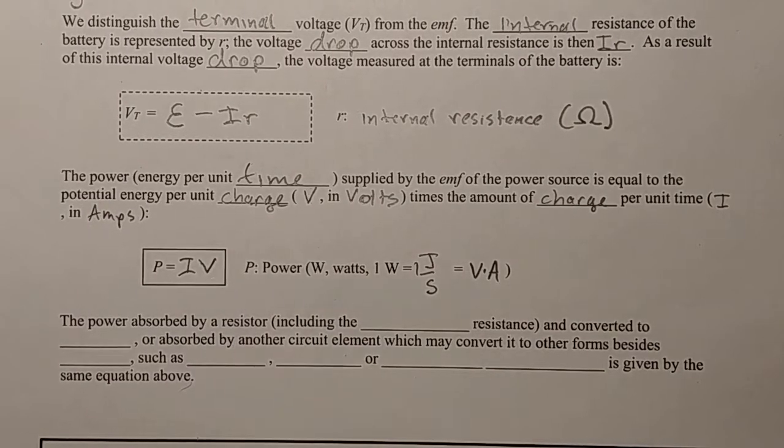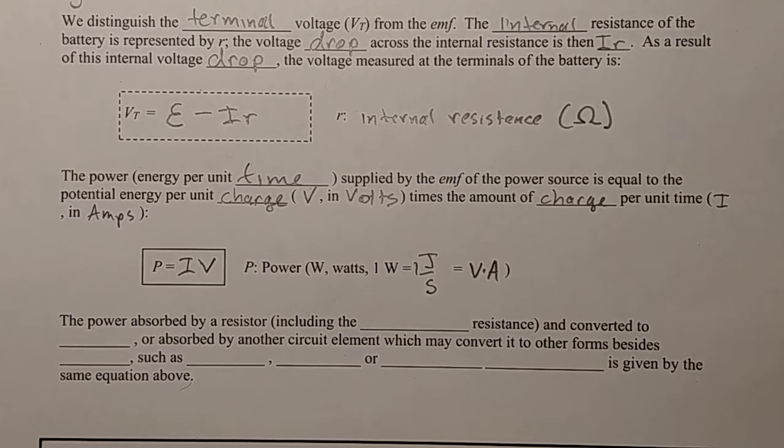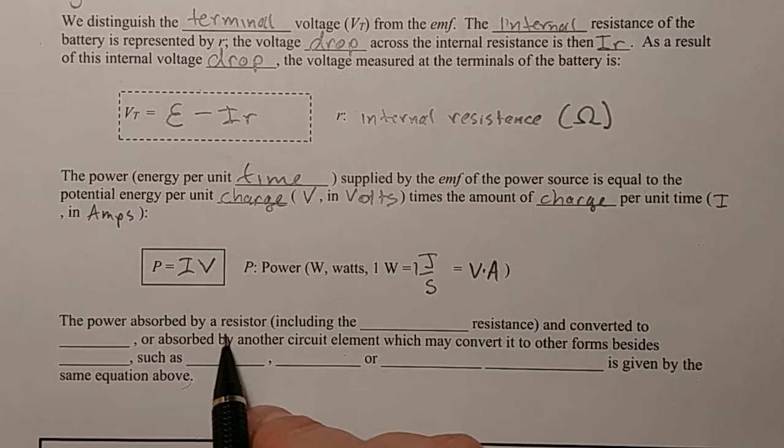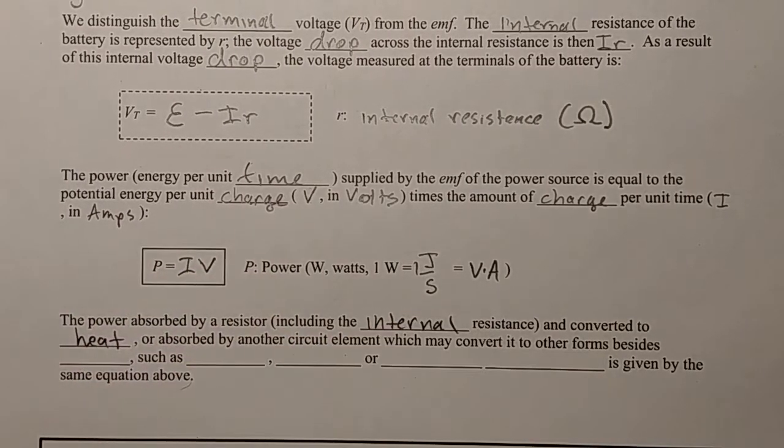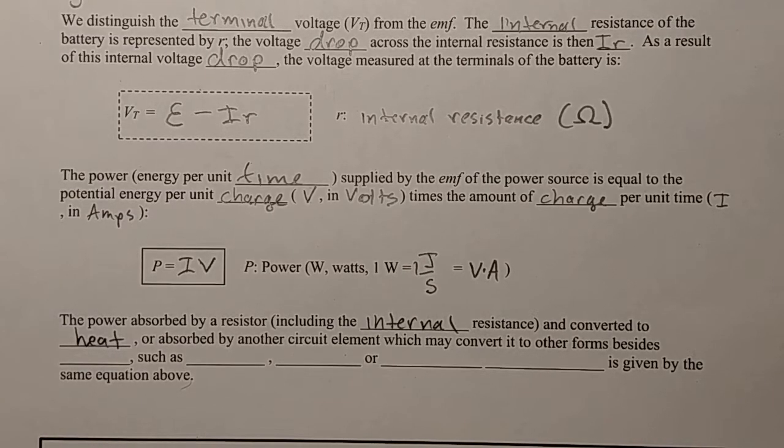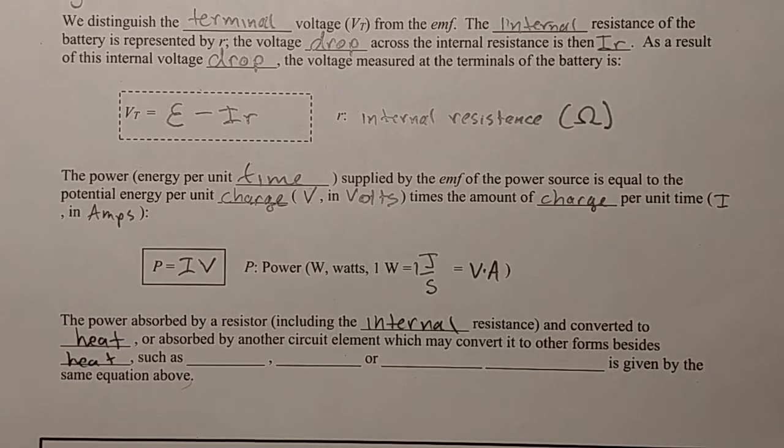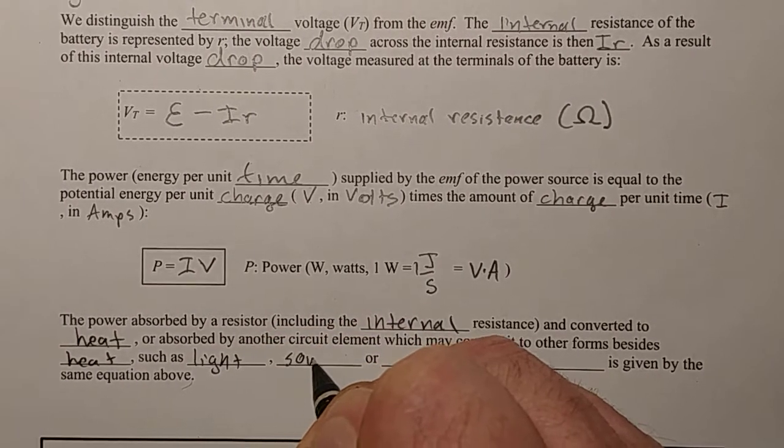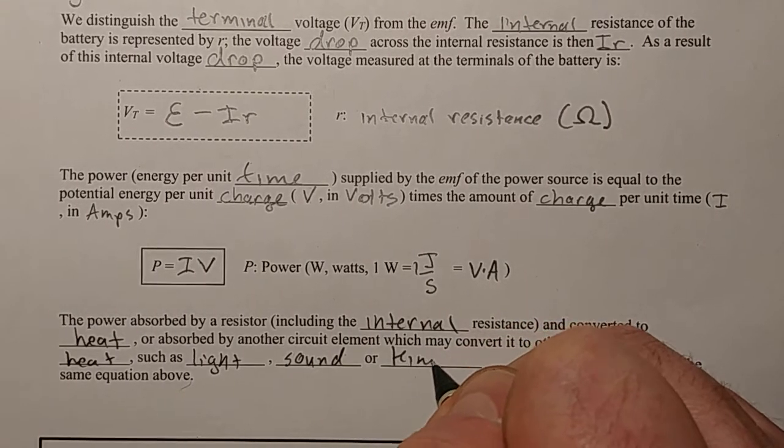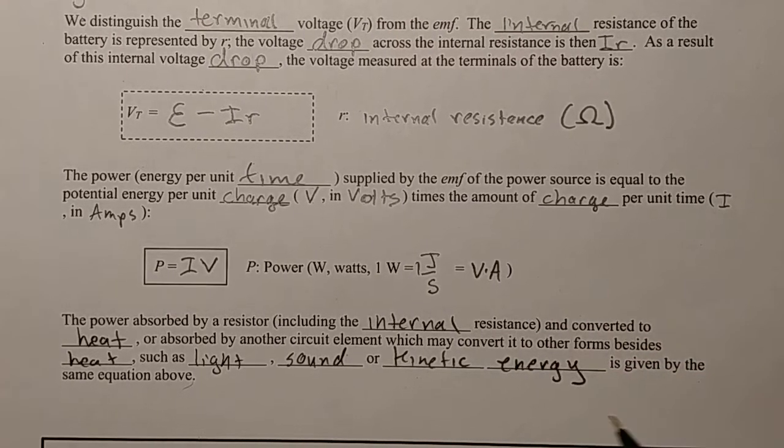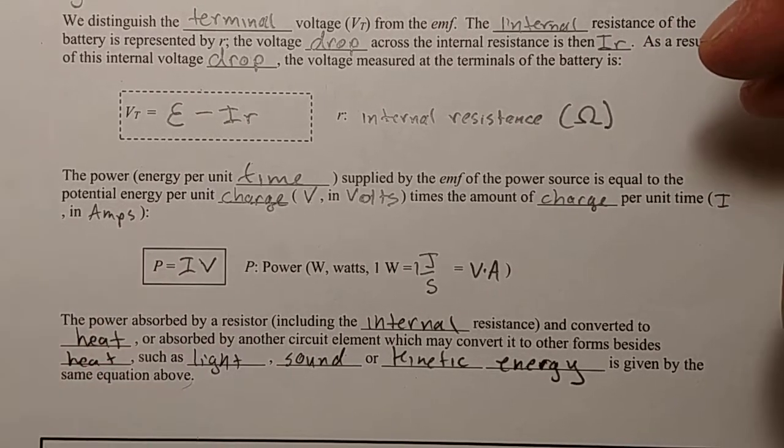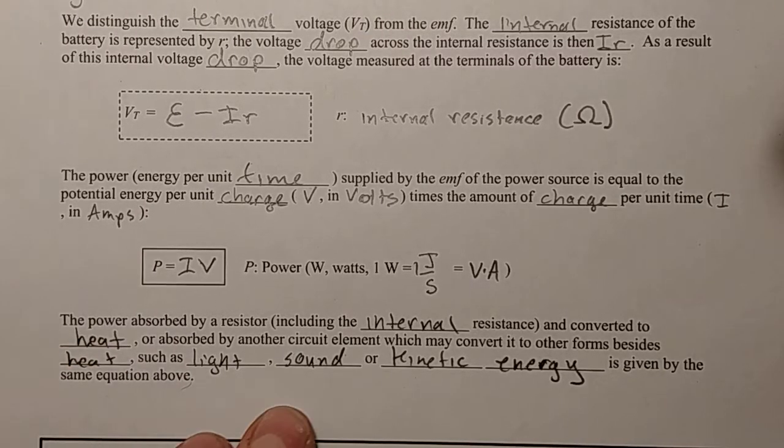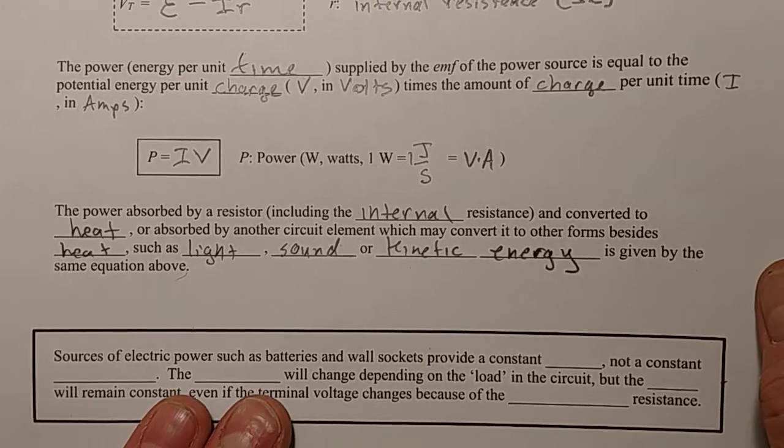So this is the power provided by a battery, the power provided by an EMF, or the power consumed by a resistor. So the power absorbed by a resistor, including the internal resistance, and converted to heat. That's what resistors do. Or other circuit elements, which may convert it to other forms besides heat. And what other forms do we get? We get things like light, sound, kinetic energy, it can make things move. So whenever we have current going through a voltage drop, there is power being consumed by the circuit, which for a simple resistor will cause heat, but in other elements can create other things. It's transforming that electrical power into some other form of power, some other energy at a certain rate per unit of time.